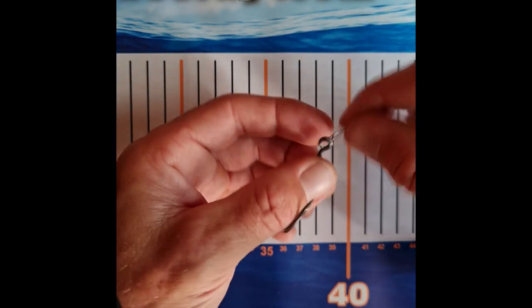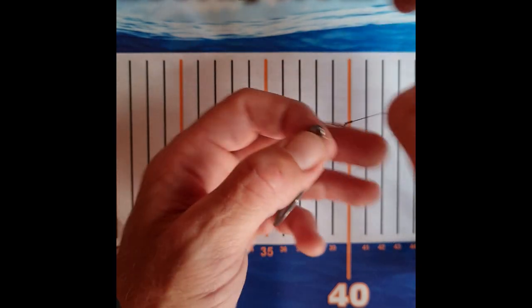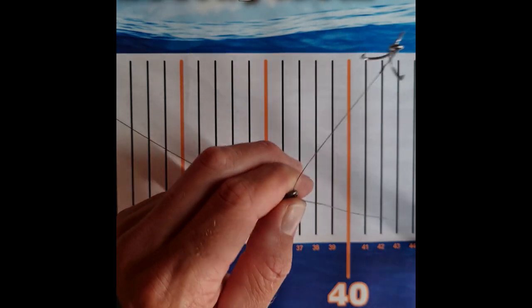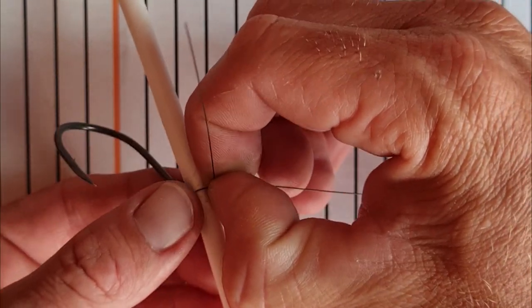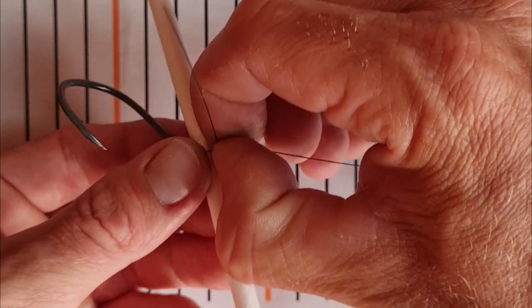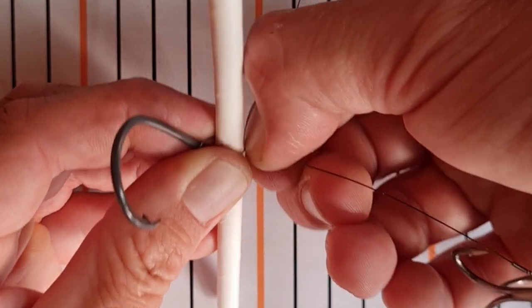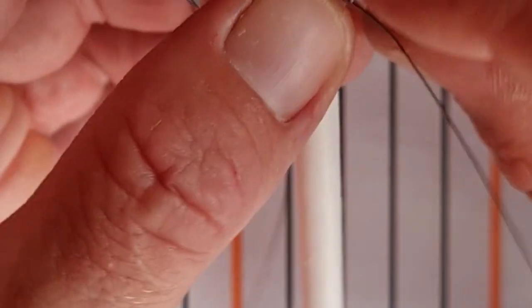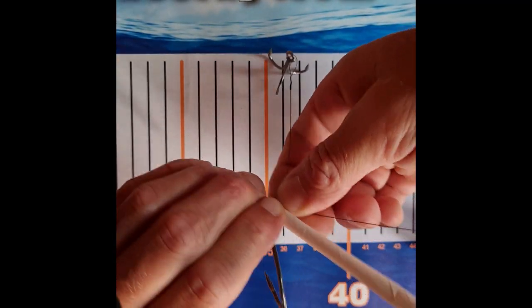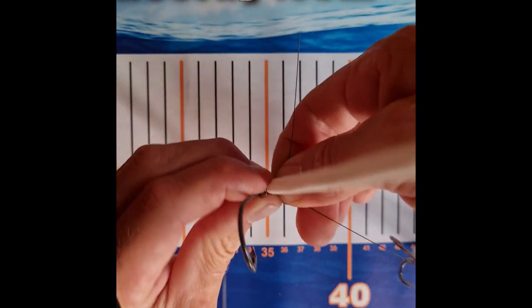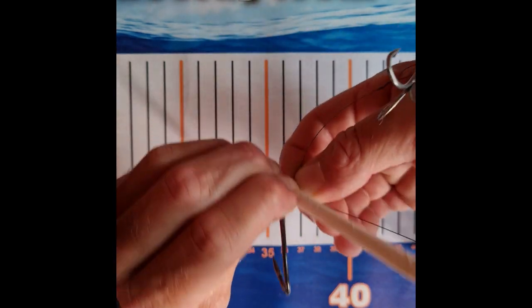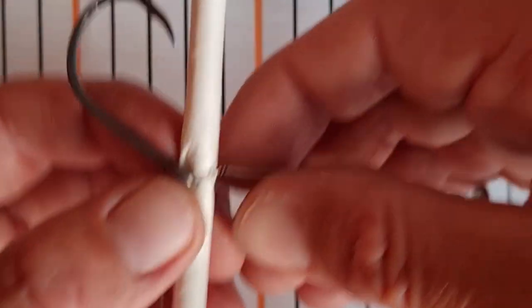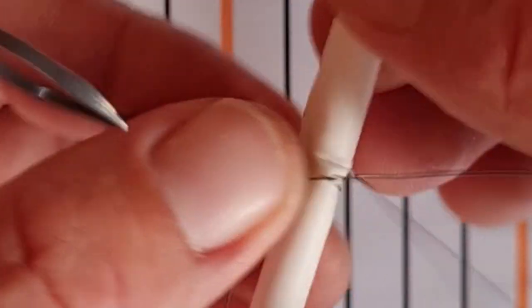So the next step is to get the hook through the eye of the hook. Get your straw, so you want to carefully kind of compress the straw so it's super tight. And then again 45, slow twist, very slow and careful. Let's have a look at that. That looks okay, I'll get it off the straw.